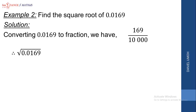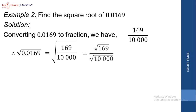We are looking for the square root of 0.0169, which gives us the square root of 169 over 10,000. According to our rule of square roots, we split this to get the square root of 169 all over the square root of 10,000. The square root of 169 is 13, and the square root of 10,000 is 100. So we have 13 over 100, which equals 0.13. We can conclude that the square root of 0.0169 is equal to 0.13.